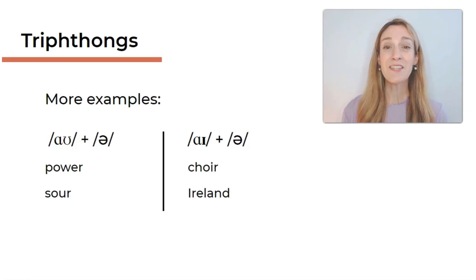Let's have a look at some more examples for triphthongs in English words. First of all, for aʊ and ə, for example, power, or sour. And just to illustrate the meaning quickly, power when something is strong, this is a noun. And sour is an adjective, this is the taste of a lemon.